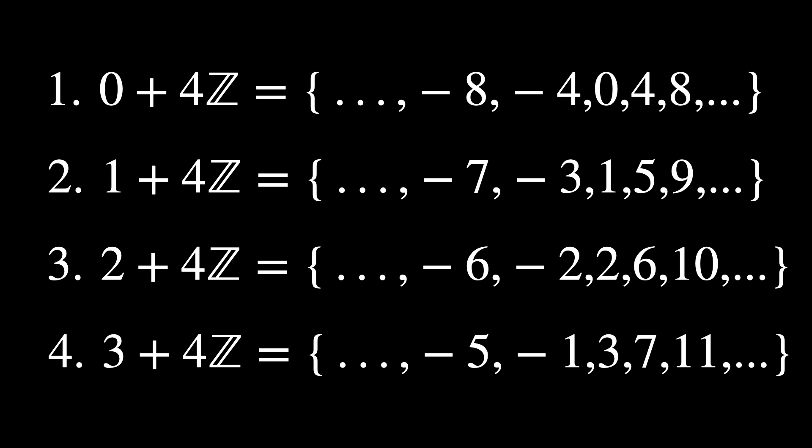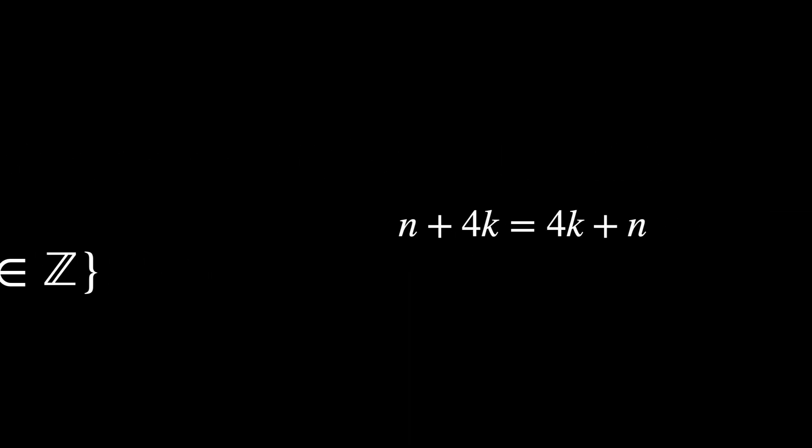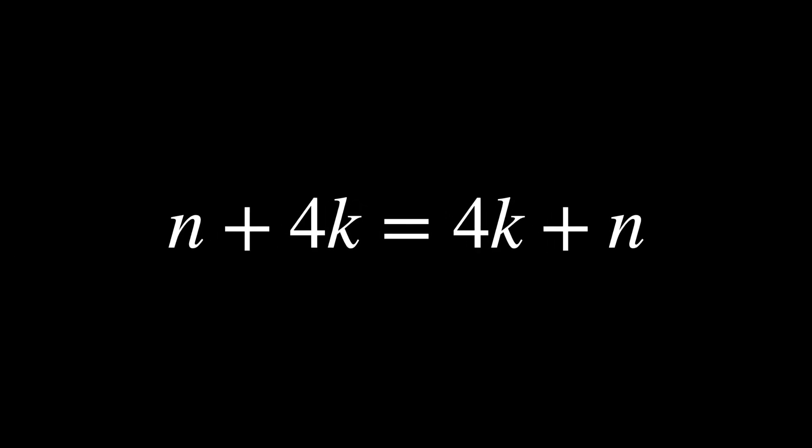A particularly interesting type of subgroup is a normal subgroup. Unlike general subgroups, normal subgroups are such that their left and right cosets are identical. Consider the group of integers under addition (denoted by Z) and the subgroup 4Z, which consists of all multiples of 4. A coset is formed by adding a fixed number to each element of the subgroup. Since addition is commutative in the integers — n plus 4k equals 4k plus n — the left and right cosets are identical. This means you can divide the whole set of integers into four cosets: 0, 1, 2, 3 modulo 4, and this consistency is what makes 4Z a normal subgroup.